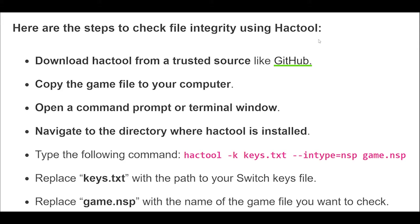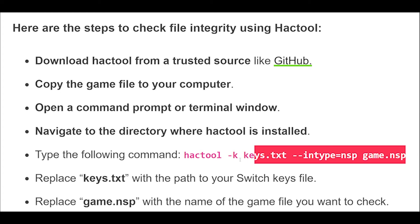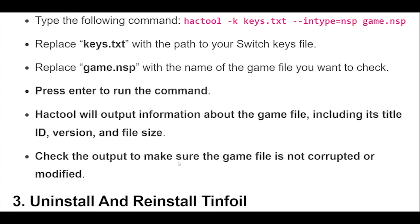Download Hacktool from a trusted source like GitHub. Copy the game file to your computer. Open a command prompt or terminal window. Navigate to the directory where Hacktool is installed. Type the following command: hacktool --keys keys.txt --type nsp game.nsp. Replace keys.txt with the path to your Switch keys file, and replace game.nsp with the name of the game file you want to check. Press Enter to run the command.